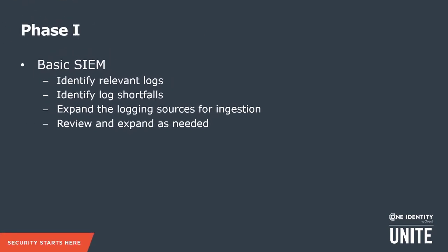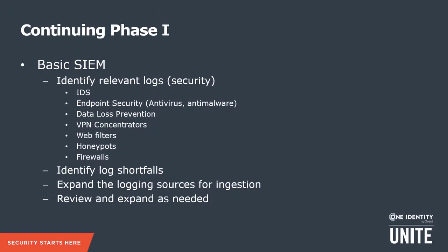In phase one, we're really talking about identifying relevant logs, finding your shortfalls, and expanding your log sources. The more logs, the more effective a SIEM is — always remember that. You have to constantly review and expand what you're collecting. What kind of logs do you really need? You've got security logs: your IDS, your antivirus — really the things you think of when you start talking about security. These are really relevant and you need to keep them identified and growing.